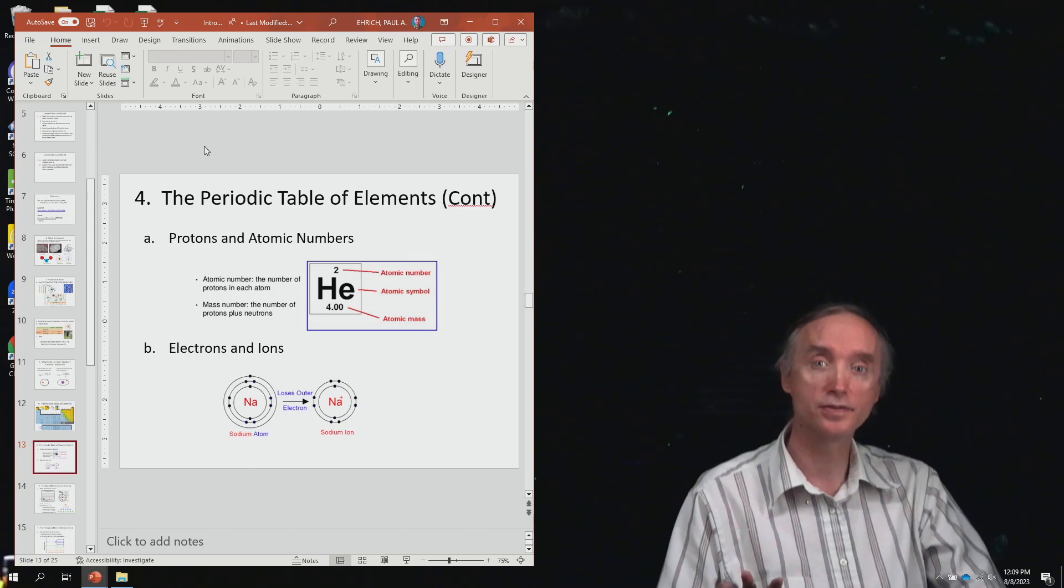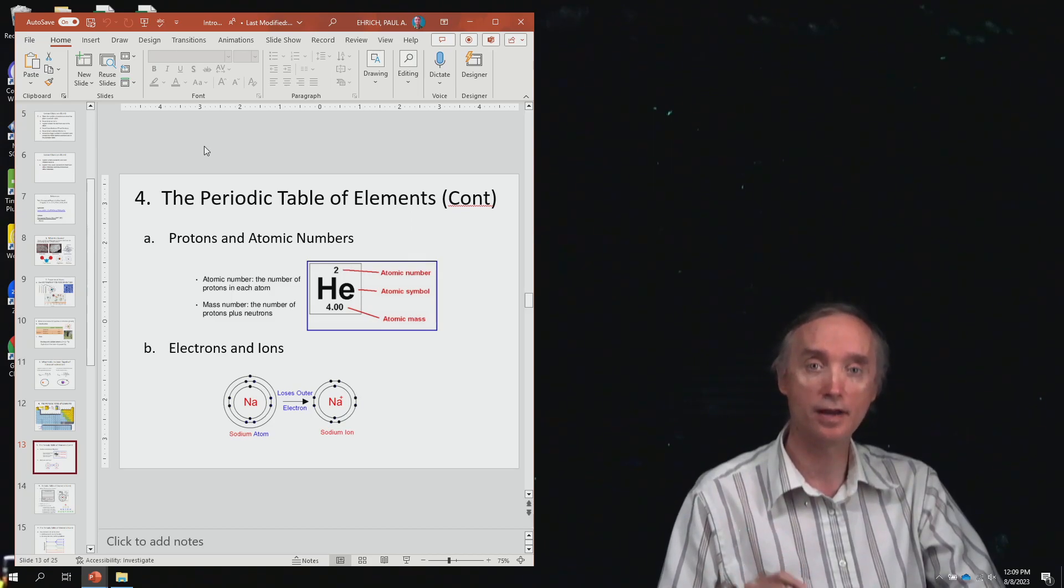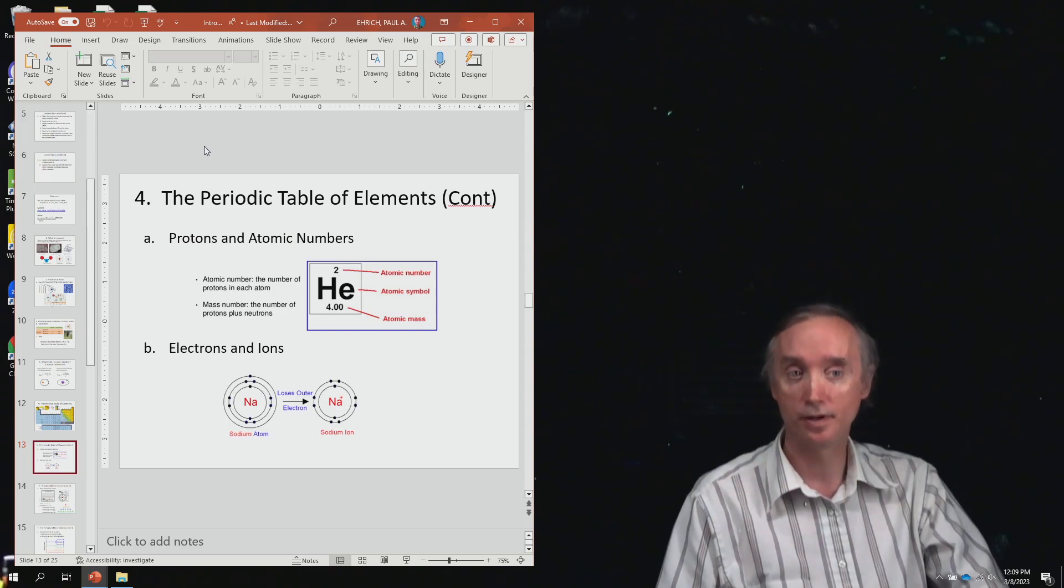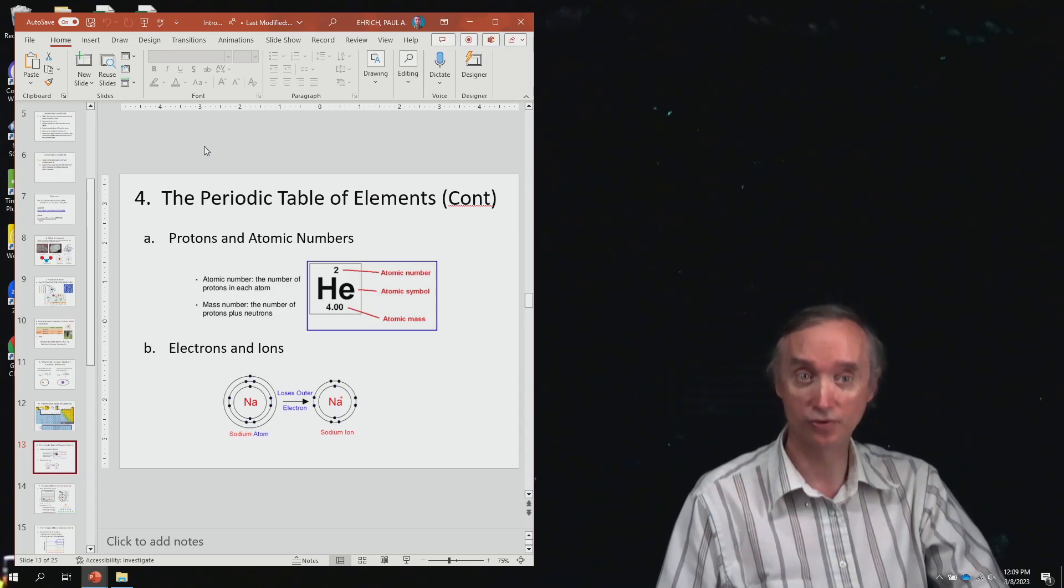So here, again, is the number that does not have a decimal point is going to be the atomic number. That's the number of protons. And then if that particular element is neutral, that number is also going to be the number of electrons that that element is going to have, the total number of electrons it's going to have.